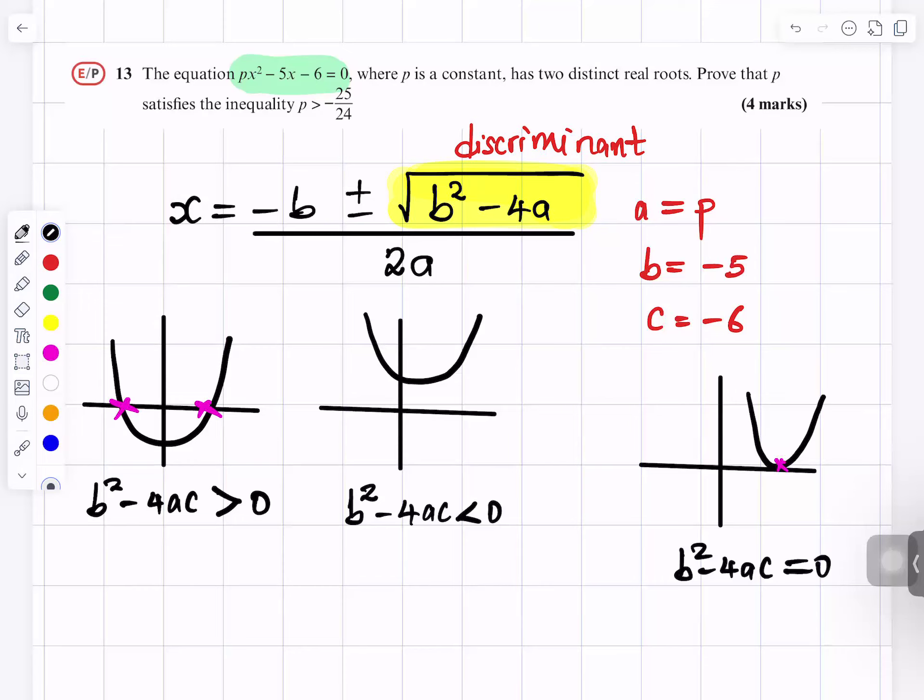Now, they said two distinct roots. So two distinct roots. So the one that has two distinct roots is this one there.